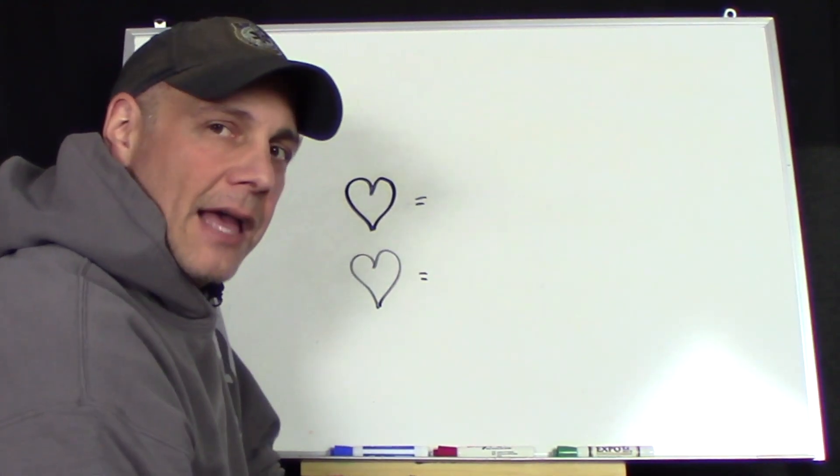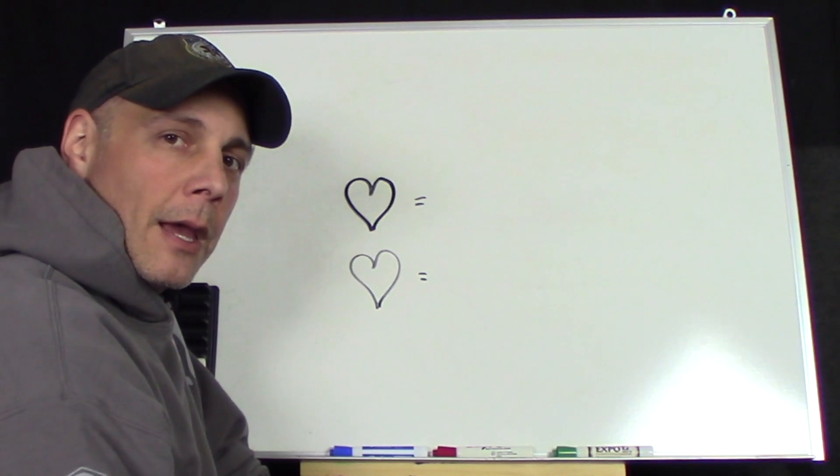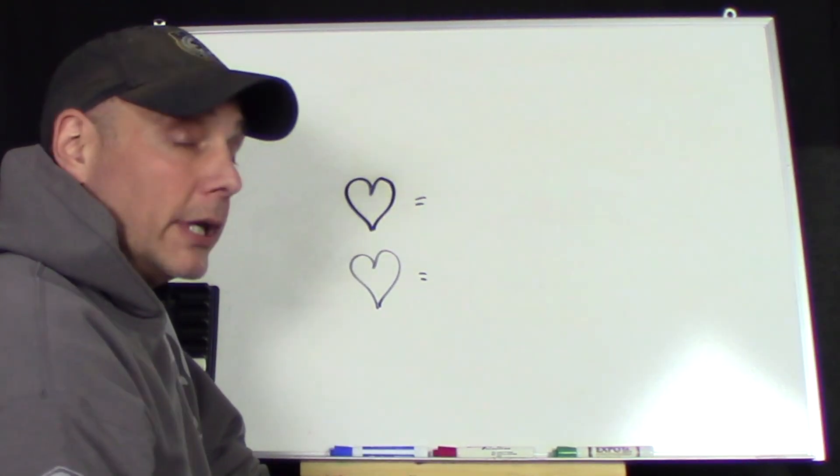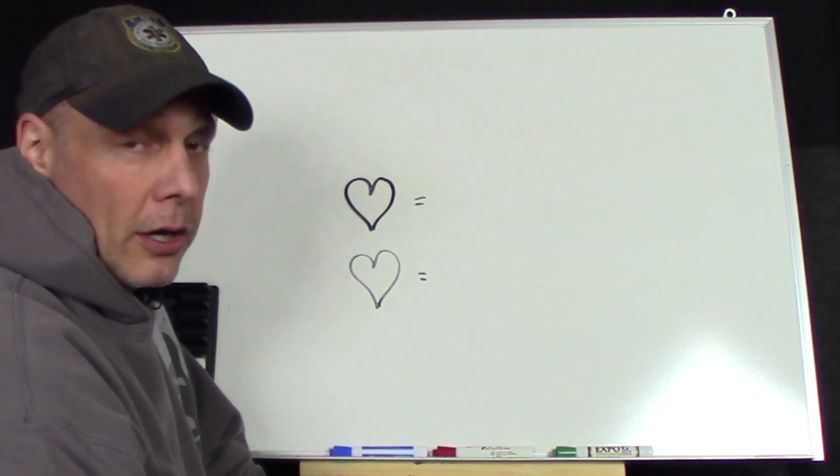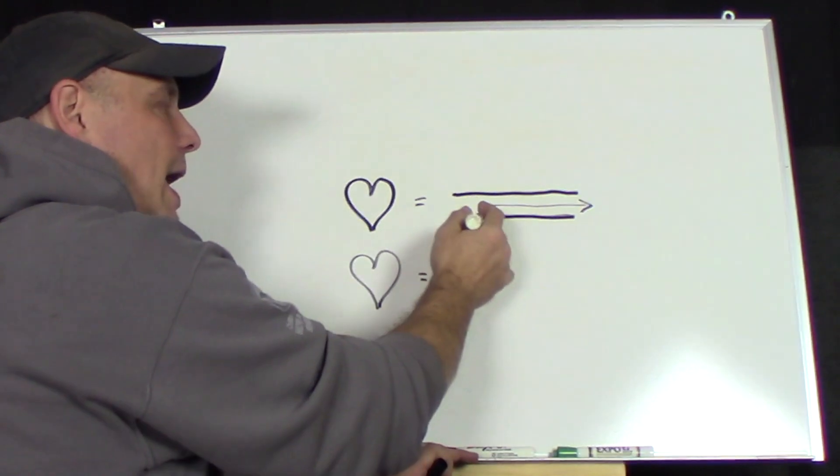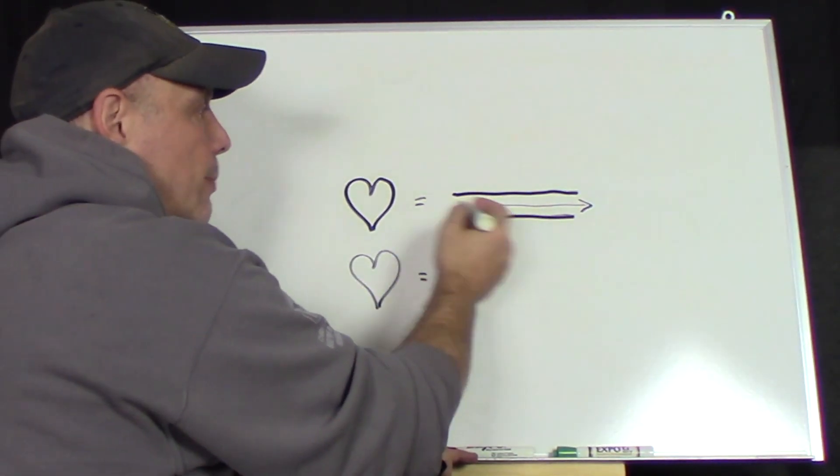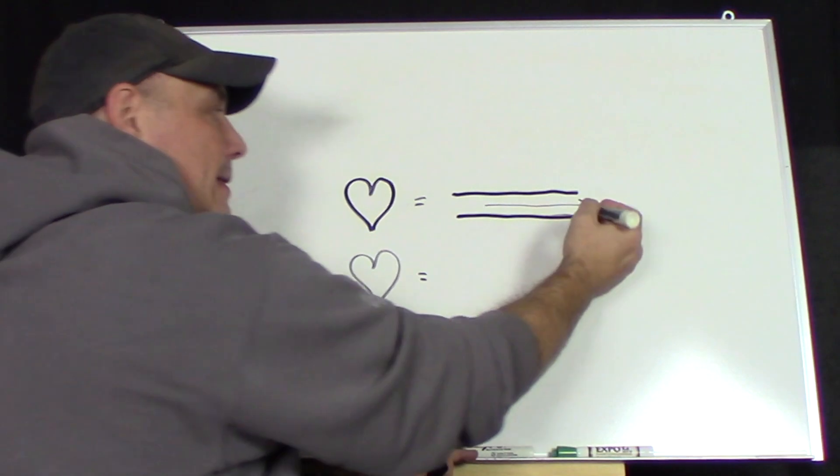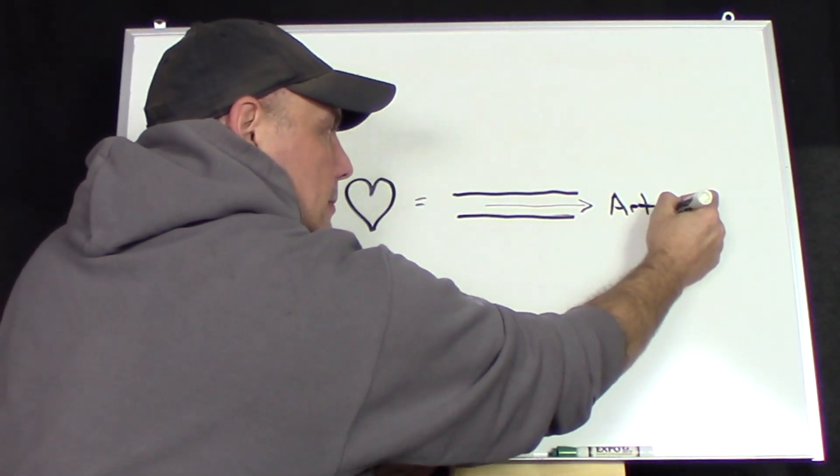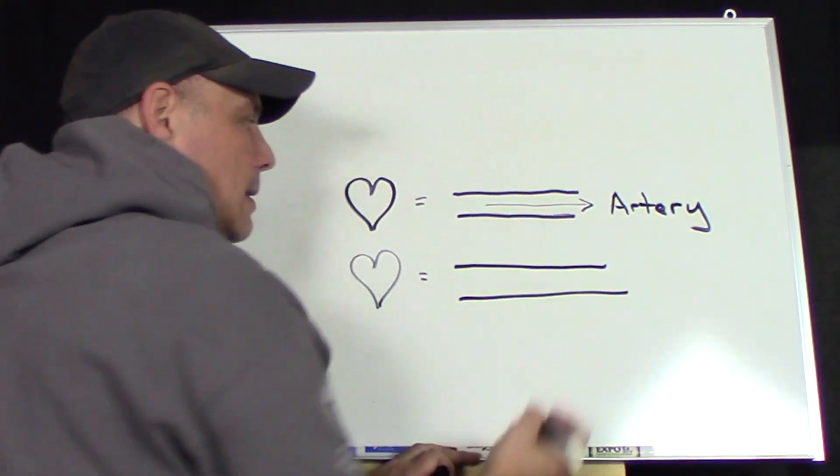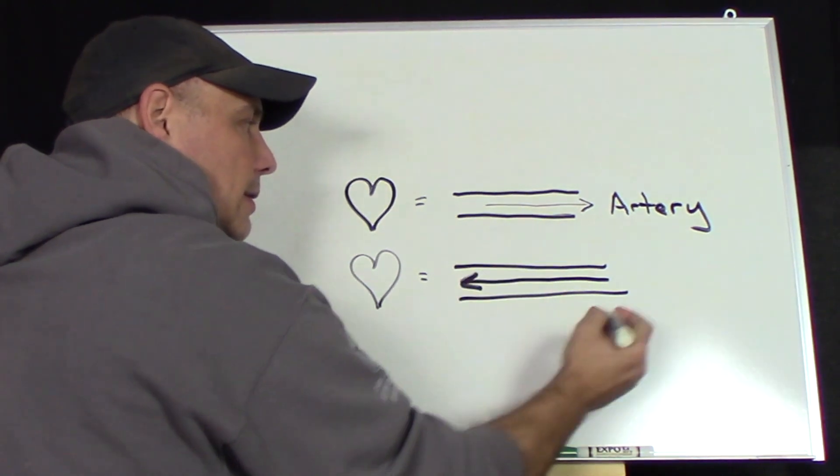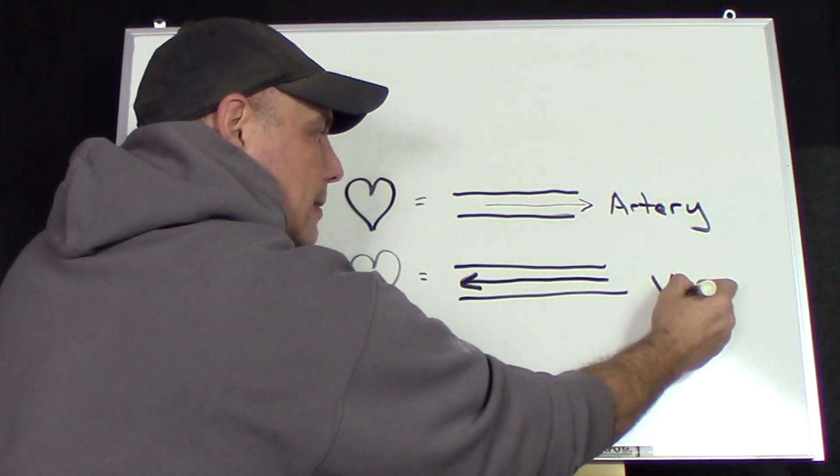So we're going to define what is an artery and what is a vein. It's not whether it's red or blue, whether it's oxygenated or deoxygenated, really all it means is whether it's going to or from the heart. If you have a blood vessel where the blood is moving away from the heart, that is an artery. If you have a blood vessel where the blood is going to the heart, that is a vein.